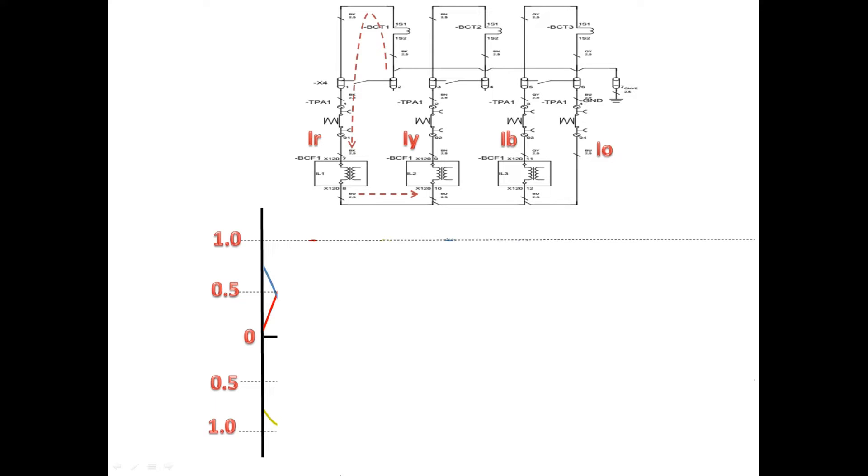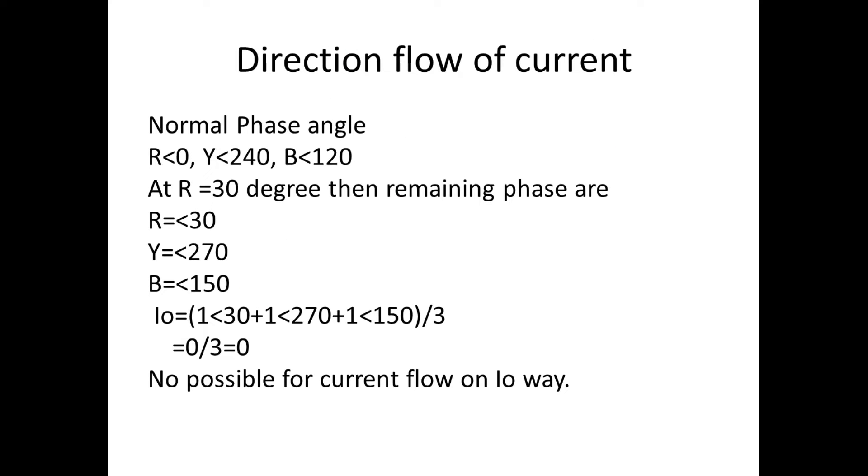Now we check the neutral path, is it possible to flow in neutral path or not? Normal phase angle difference is 0, 240, 120. Now we are seeing at 30 degrees, so all phases will have 30 degree phase shift. When you go for finding the zero sequence current, it is zero, so no possibility to flow in I0.